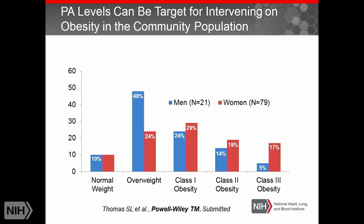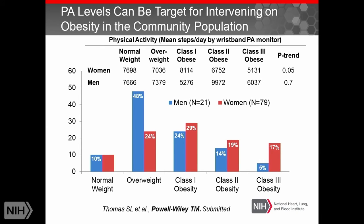When we looked at potential targets for intervention from the health and needs assessment, we saw that the majority of participants — particularly among women — had obesity, with a large number having class 3 obesity. When we looked at physical activity across weight categories, we saw that for women in particular, physical activity levels decreased across weight categories. This suggested that in developing intervention targets, we could really focus on physical activity levels for overweight and obese women in these areas of Washington, D.C.